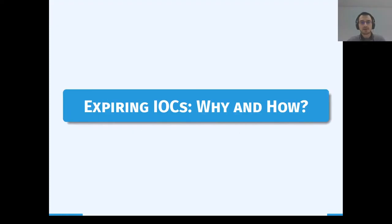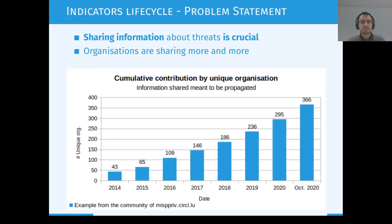We are quickly going to see why and how you should explore IOCs. Sharing information about threats is crucial, especially in the cyber security sector. Something we noticed is that organizations are sharing more and more. If you look at the graph below, it shows the cumulative contribution by unique organization where the information they share was meant to be propagated. These numbers are coming from one of our instances for the private sector, and year over year organizations are sharing more and more, and more and more organizations are sharing.